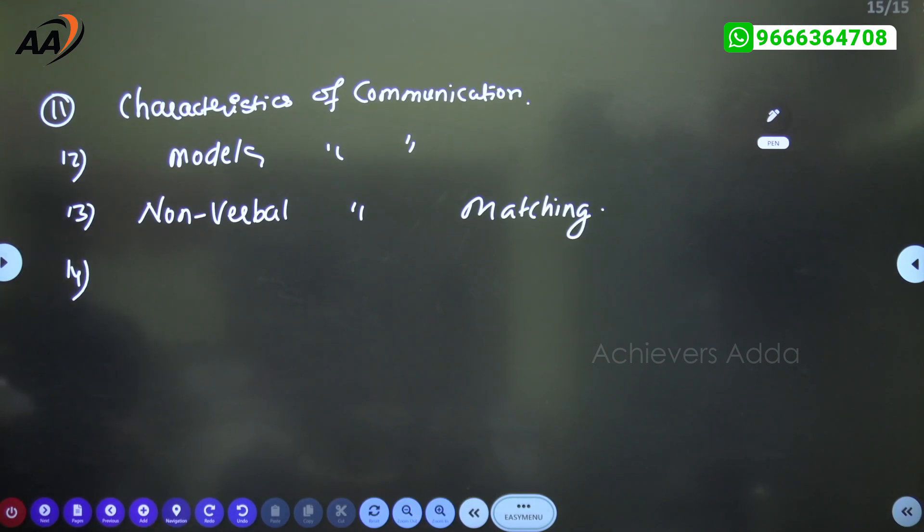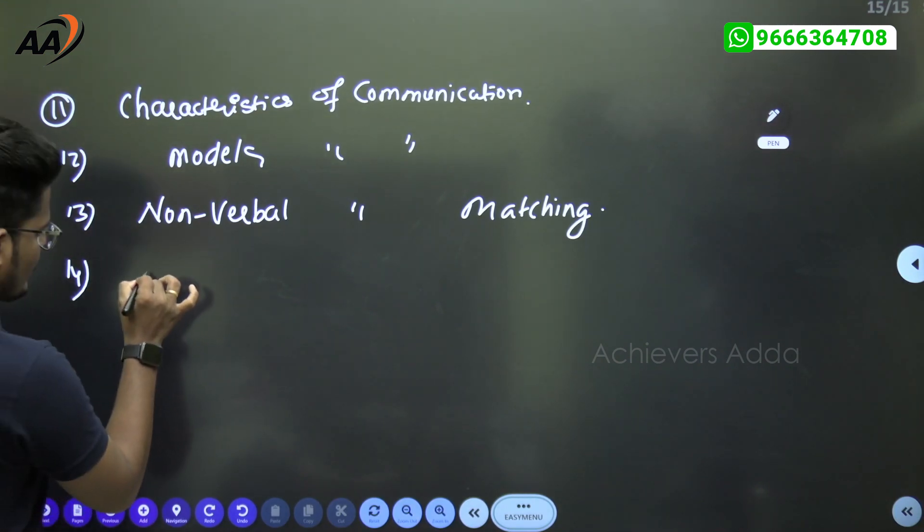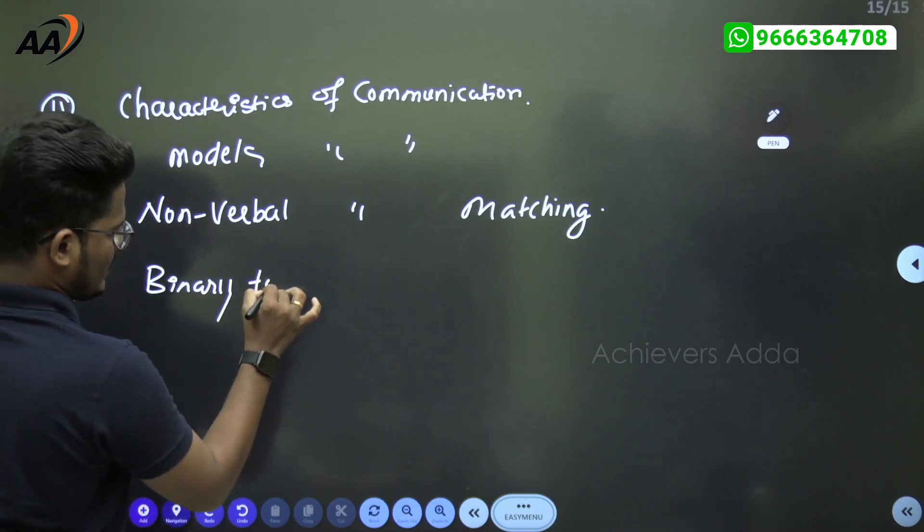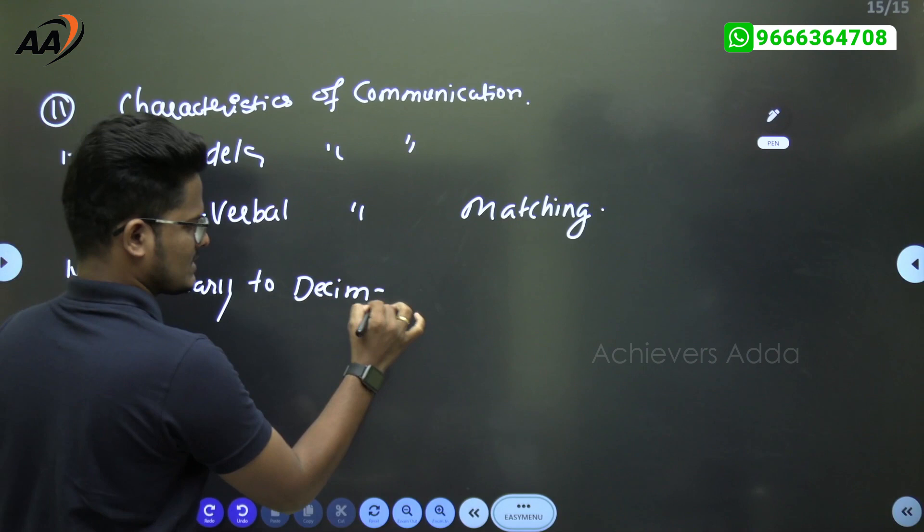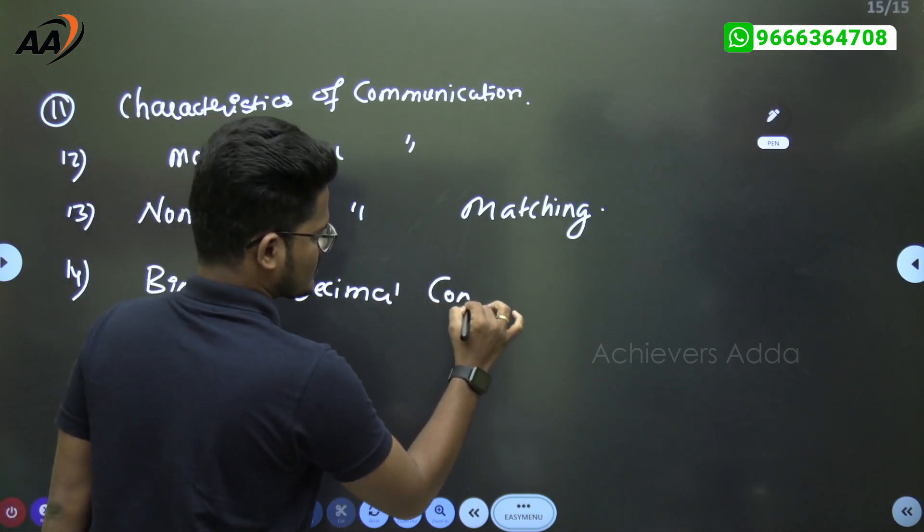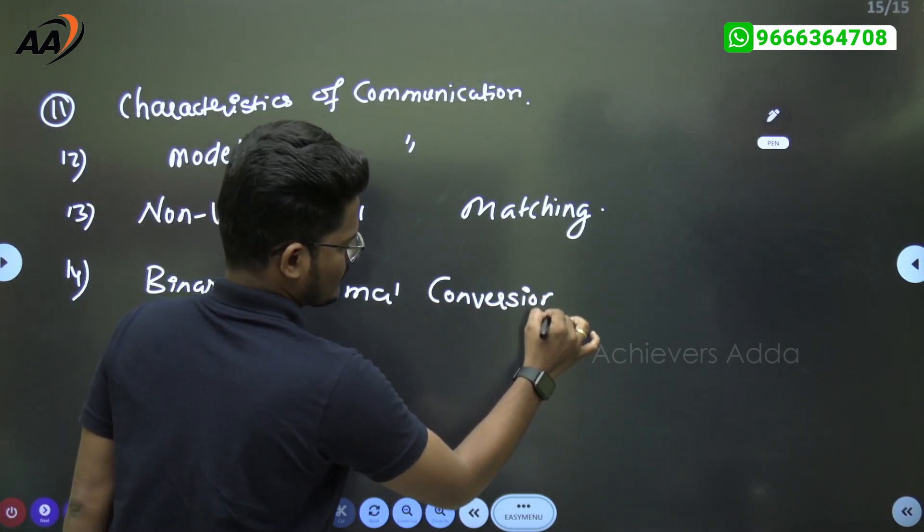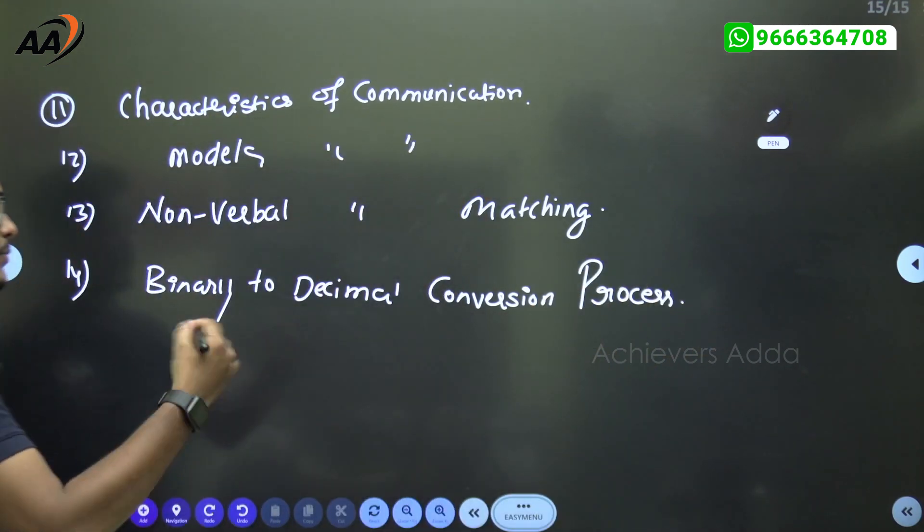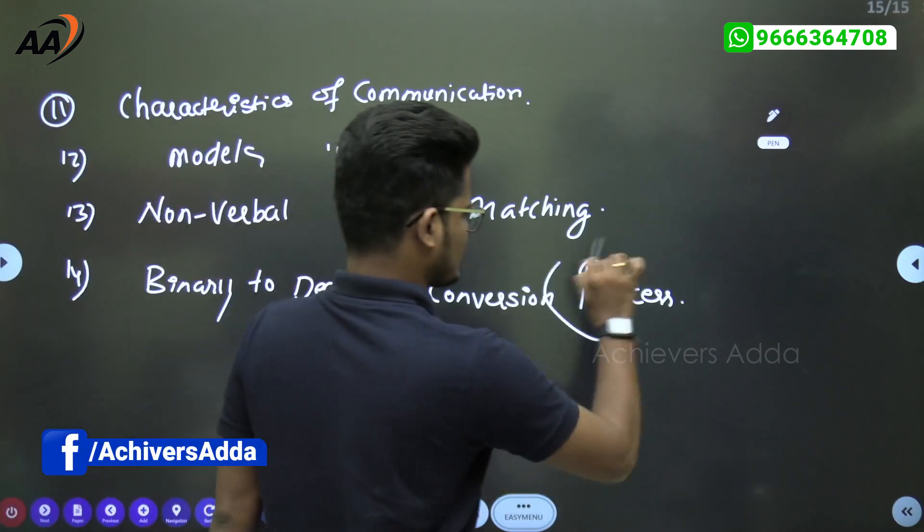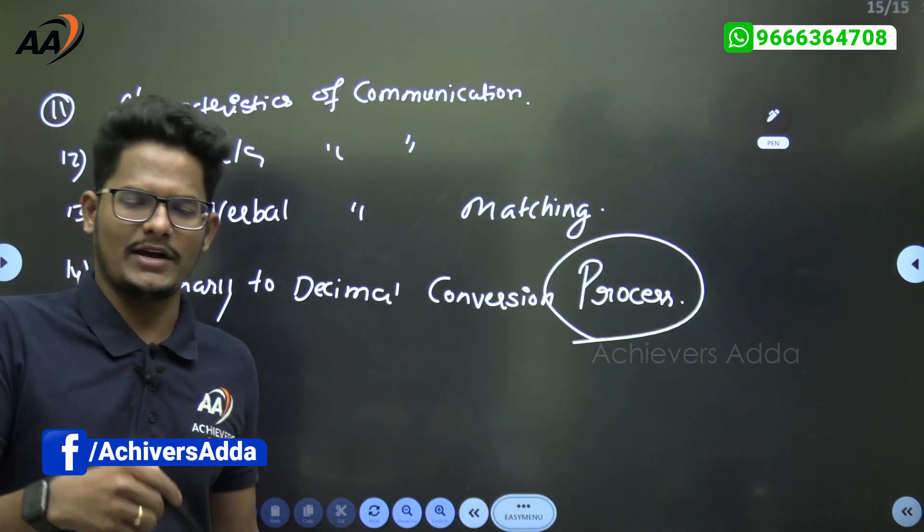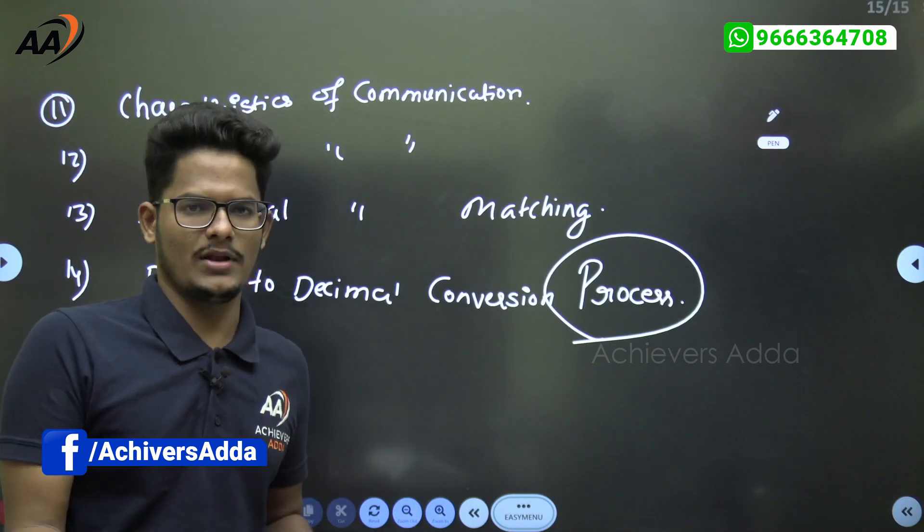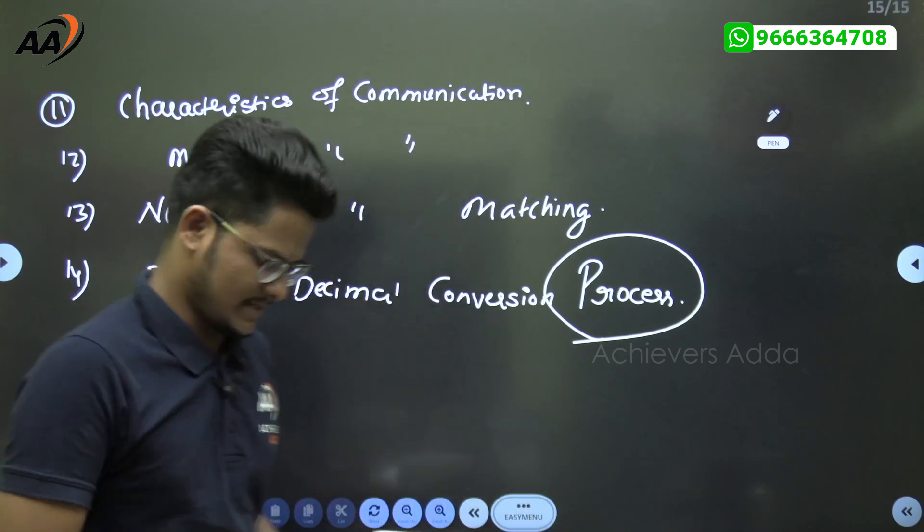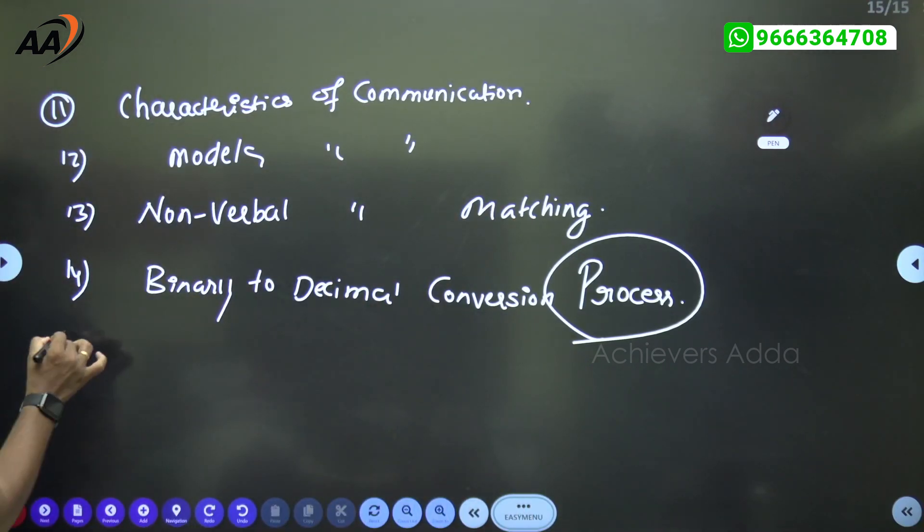Next, conversion from binary to decimal process. They are not asking the question in direct way to identify the binary number of decimal or vice versa. They are asking how to identify that - the process has been asked by giving stepwise presentation.